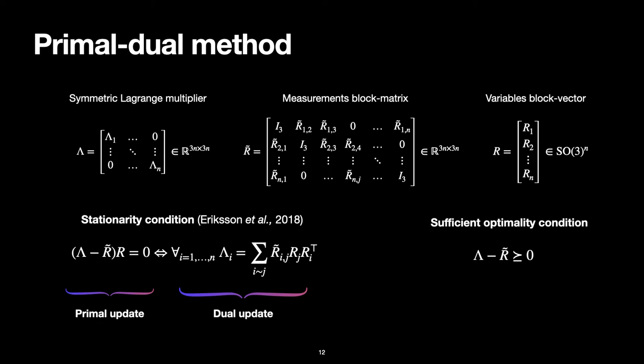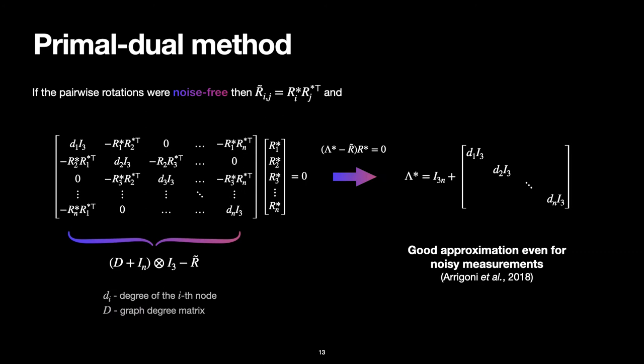We're ready to start formulating the primal-dual method, starting with initialization. We'll use one fact from the literature: the primal-dual optimal pair for noise-free measurements. When we have noise-free measurements, R̃ij can be factorized as Ri times Rj transpose. If we build the matrix, the graph degree matrix minus the measurements matrix, we will find the set of rotations lying in its kernel. This means the optimal Lagrange multiplier is given by this expression, which depends on the graph degree matrix.